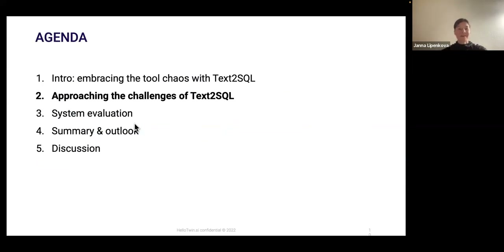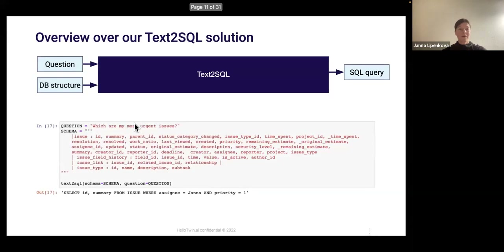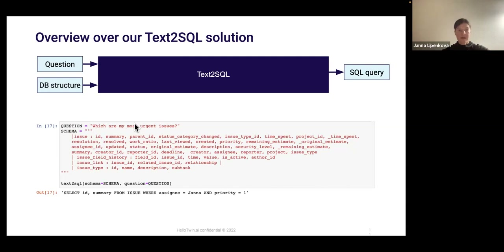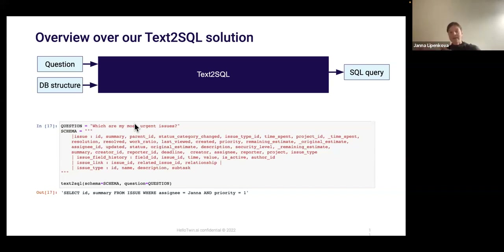Now jumping into the details of text to SQL — first an overview of our current solution. At the input, we have the natural language question, and most algorithms also take part of the database structure as input. The database structure can include table names, column names, primary and foreign key relations, and sometimes even part of the database content serialized into the prompt. At the output, we have the SQL query — well-formed SQL that also semantically represents the original question.